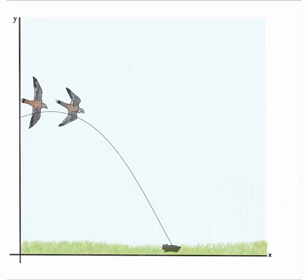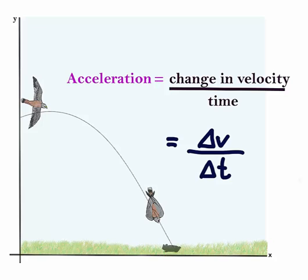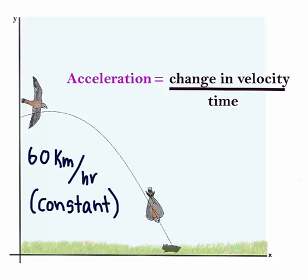The slow Kestrel now decides to accelerate to catch his prey. Remember, we said that acceleration is just a change in velocity over time. Let's assume the Kestrel got into shape and it's going 60 kilometers per hour at a constant velocity. Suddenly, it sharply accelerates down to catch his prey. So now, its final velocity is actually 100 kilometers per hour.